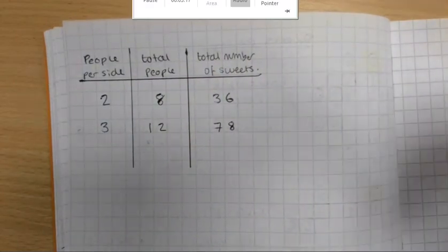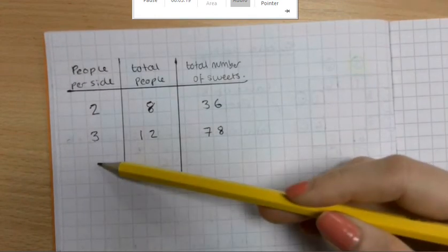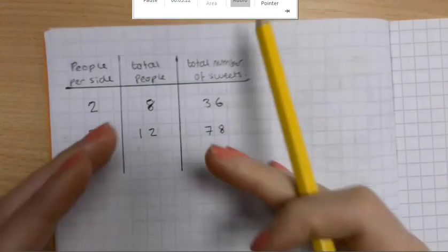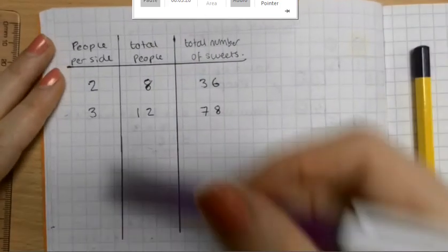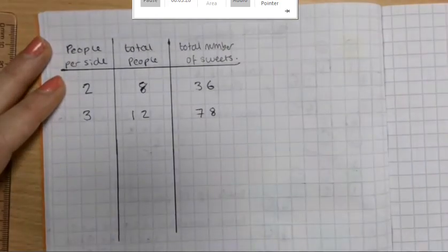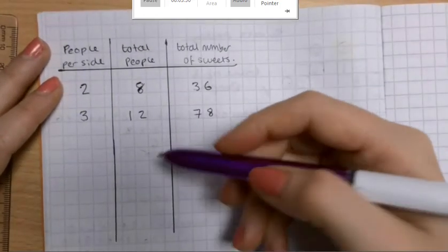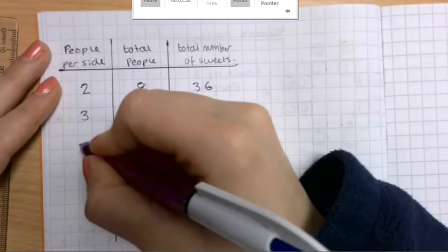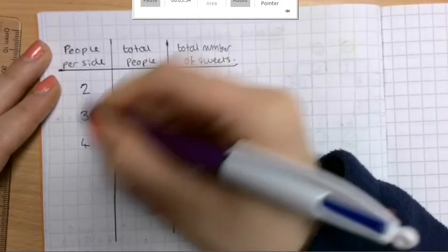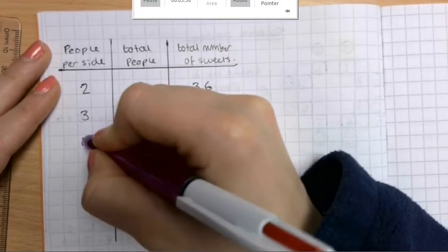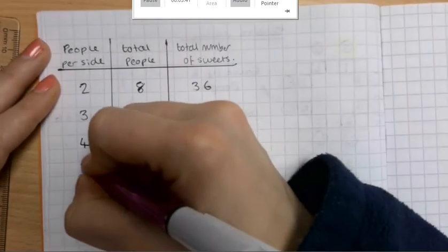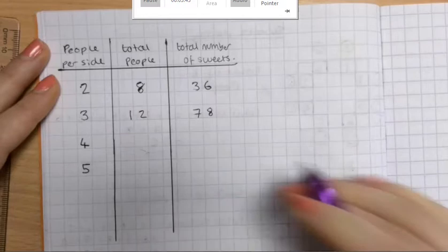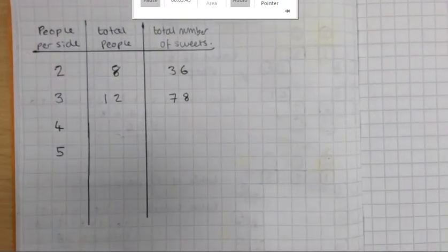Okay, so you've got three columns there. And I want you to fill this table in, making your square tables of sweets bigger and bigger, and putting your results in here. Okay, so I've just made mine a little bit longer. Make sure you use a ruler, make it nice and neat. So the next one we're going to look at is four people per side. If we go up in ones, it'll make it a lot easier for us to spot any patterns. So four people per side. And then five people. And I'll leave it there for now. And if you do more, that's amazing.